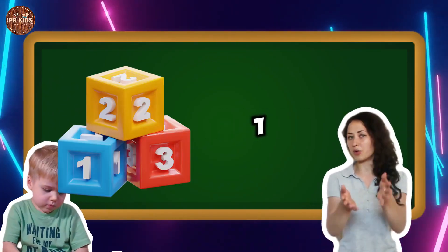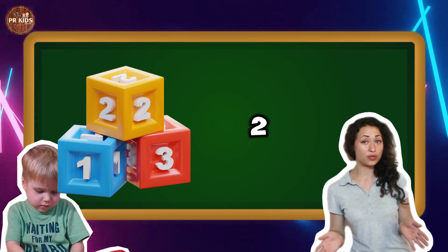Three blocks minus one block makes two blocks. One, two, two blocks left.